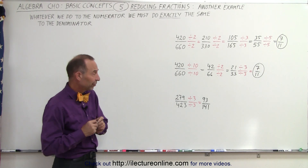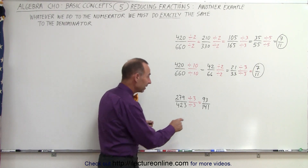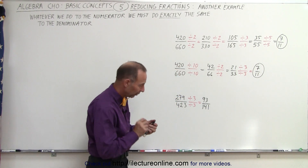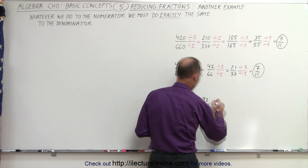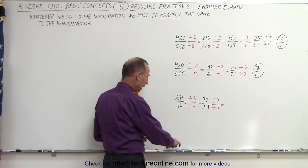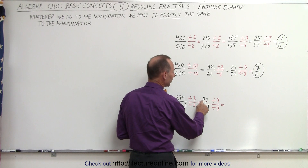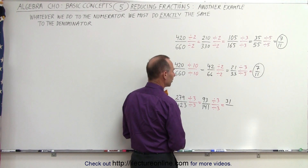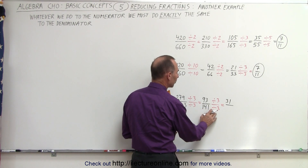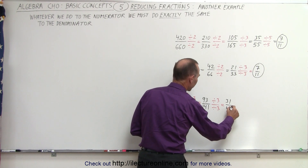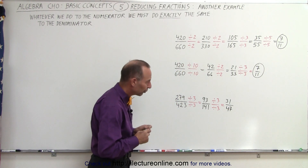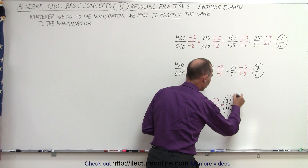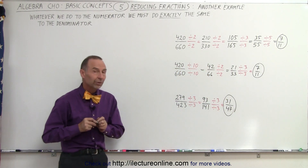Are those numbers still divisible by 3? Let's check: 9 plus 3 is 12, which is divisible by 3. And 1 plus 4 plus 1 is 6, which is also divisible by 3. So we divide by 3 again: 93 divided by 3 is 31, and 141 divided by 3 is 47. Now, 31 is a prime number and 47 is a prime number as well. Since both numbers are prime, we can no longer reduce — that is the final reduced form.